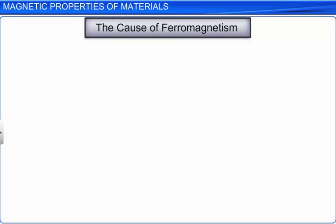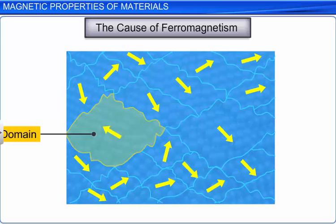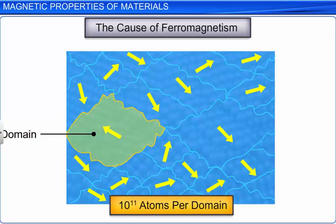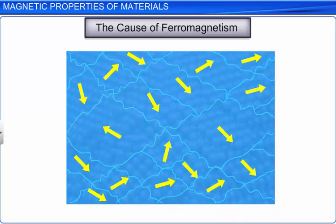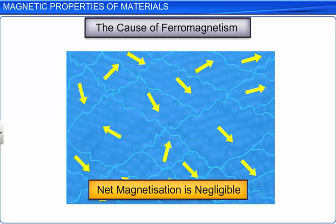These individual atoms interact with one another and arrange themselves in a common direction over a volume of some millimeters. This volume is called the domain. Each domain contains about 10 to the power 11 atoms and each domain has a net magnetization. The magnetization changes from domain to domain. Thus, the net magnetization of a ferromagnetic material is negligible.